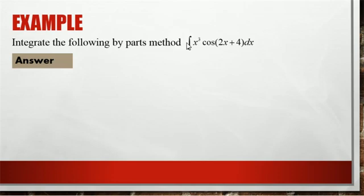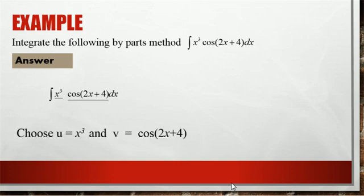In two places we are having x, so we can use this method. The first point is we have to divide the integration into two parts. One is the algebraic part and another one is the trigonometric part. Take the algebraic part as u and take the trigonometric part as v. In this case we take x cube as u and cos 2x plus 4 as v.